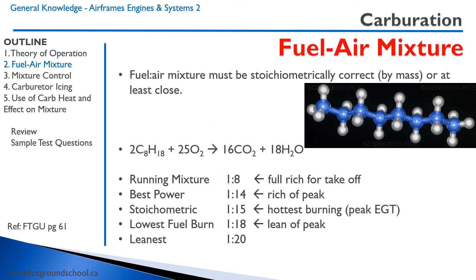The fuel-air mixture must be stoichiometrically correct by mass, or at least close. It's been a while since we've taken high school chemistry. What that means is it has to be at the correct ratio. Fuel gasoline is a hydrocarbon — it is mostly octane, so it has eight carbons and 18 hydrogens. A hydrocarbon burns when it is mixed together with oxygen, and the products are carbon dioxide and water. Here I have a balanced chemical equation for the combustion of octane.